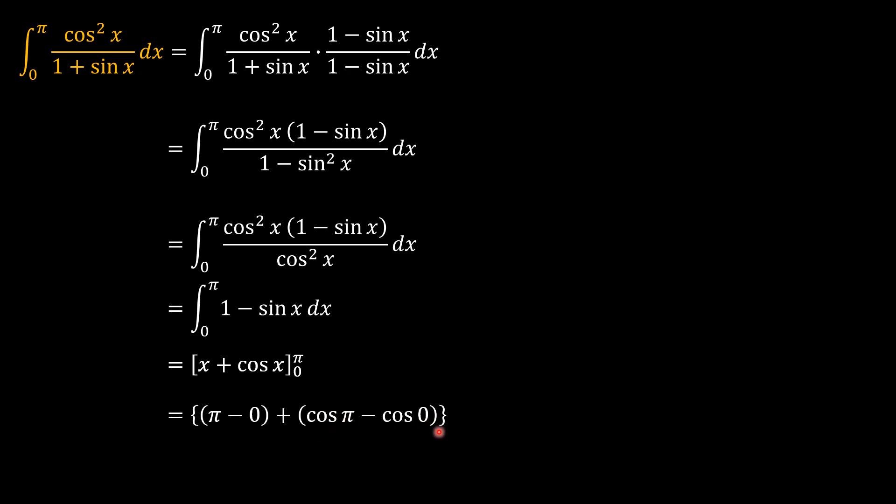So negative 1 minus 1 is negative 2. And pi minus 0 is going to be pi. So we have pi minus 2 being the answer. And that is it.